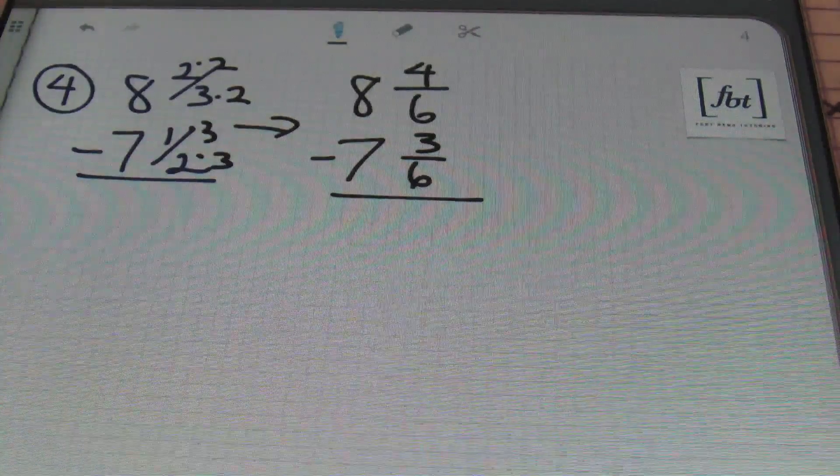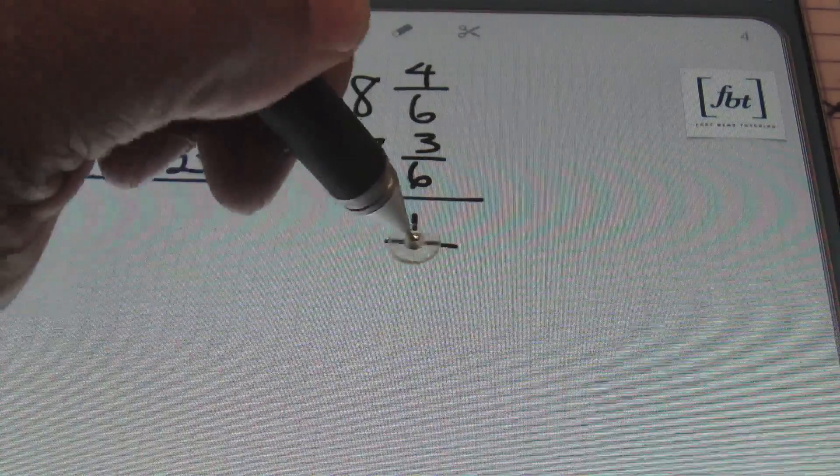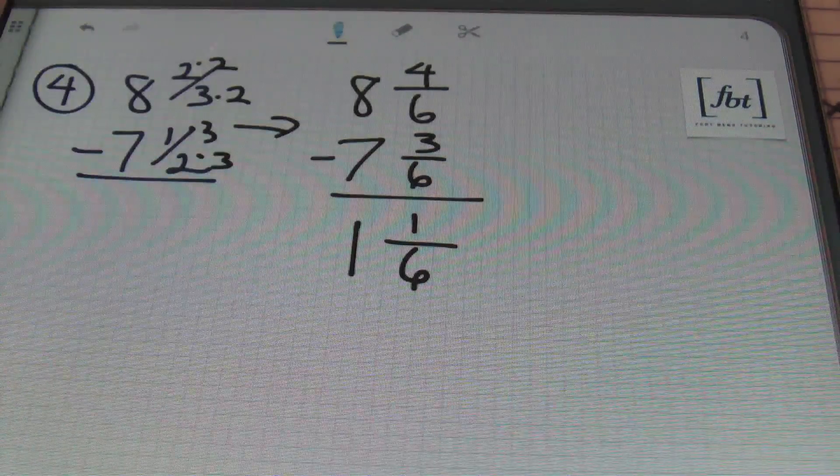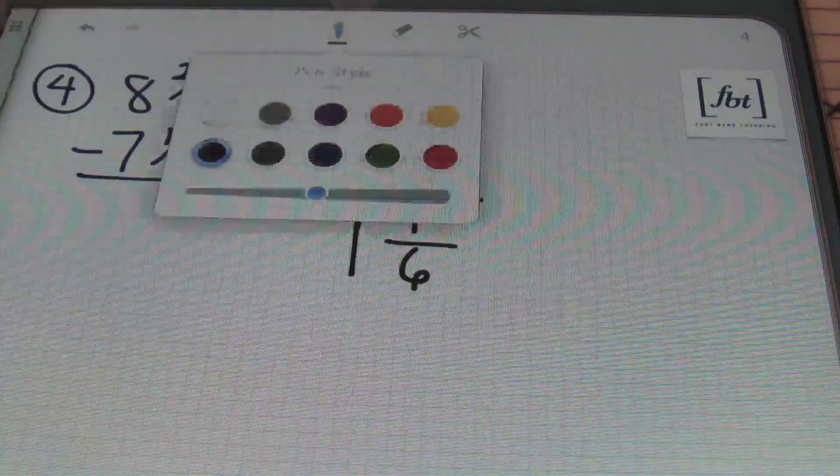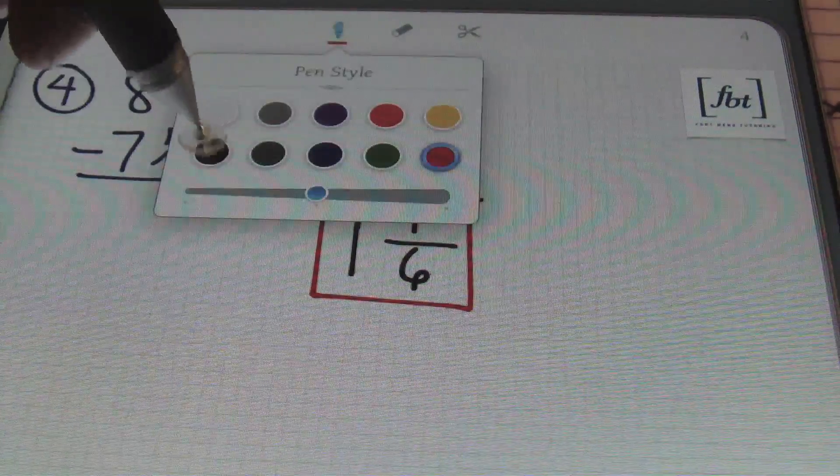After I've done that, you can just go ahead and subtract now. So 4 minus 3 is 1 over a denominator of 6, and 8 minus 7 is 1 to give me a result of 1 and 1 sixth. That's it. Let's keep pushing on.